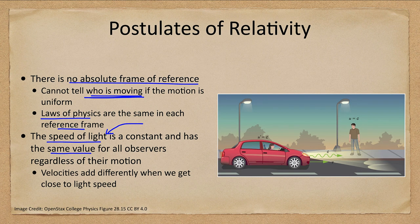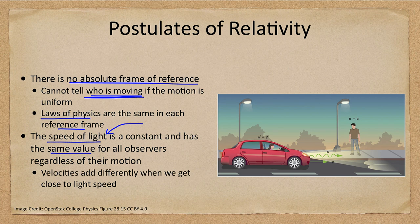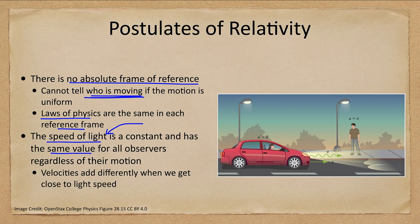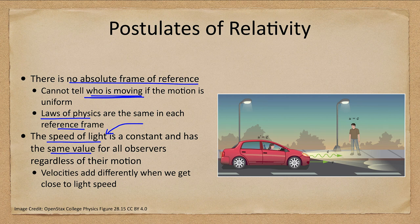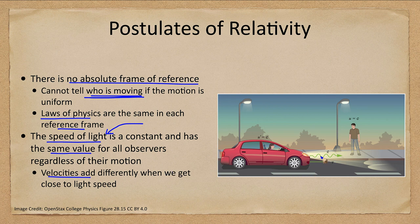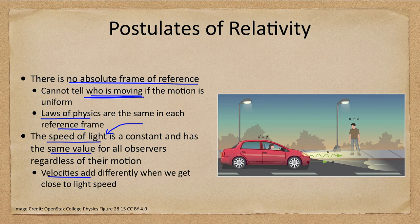Since the speed of light is constant, velocities will add differently. Normally we can add velocities together - if you're moving and something is thrown, you add the two velocities to get the net velocity. When you get close to the speed of light, this doesn't work.